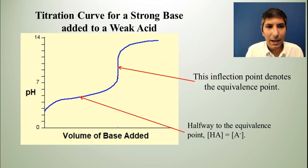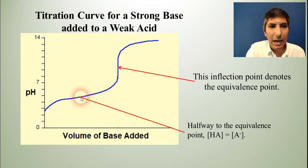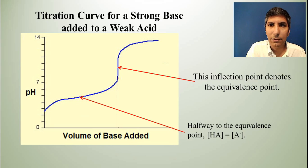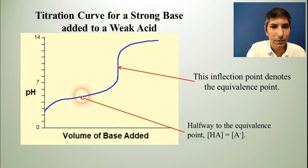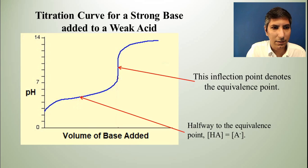Because of that, at that particular point, the pH of the solution is equal to the pKa — the negative log of the Ka — of that acid. So at that point, the acid concentration equals the conjugate base concentration.